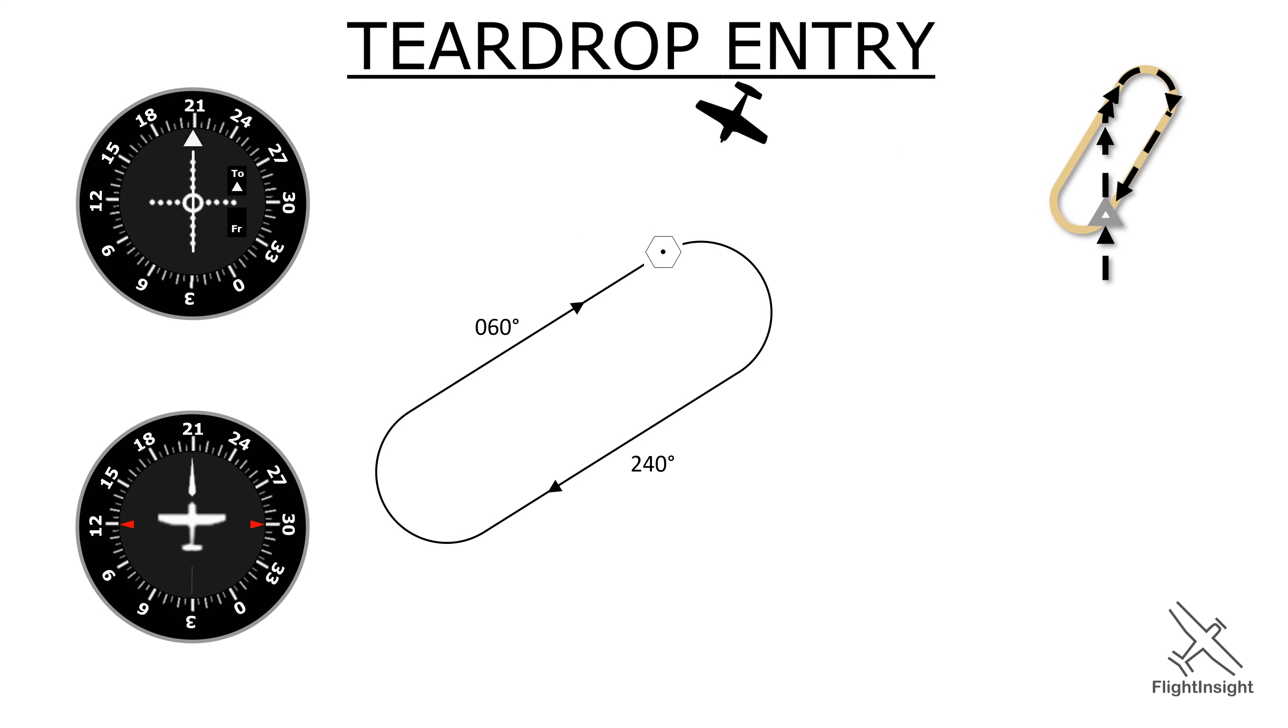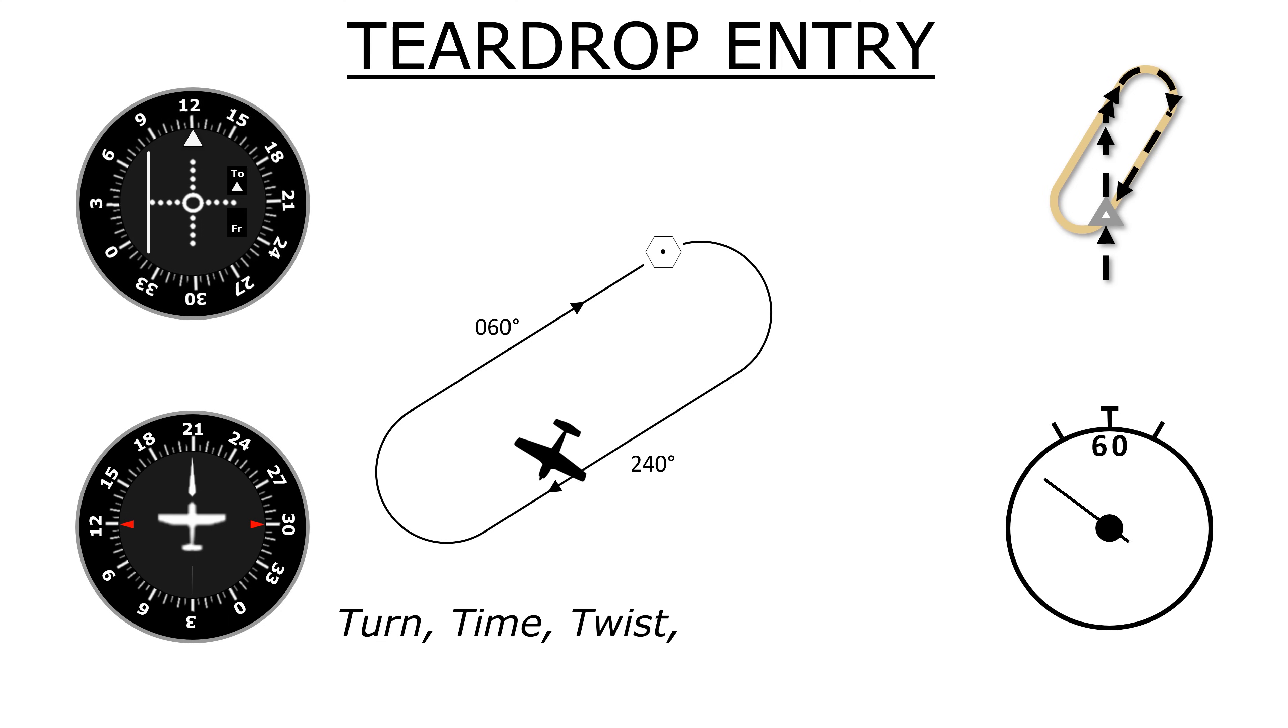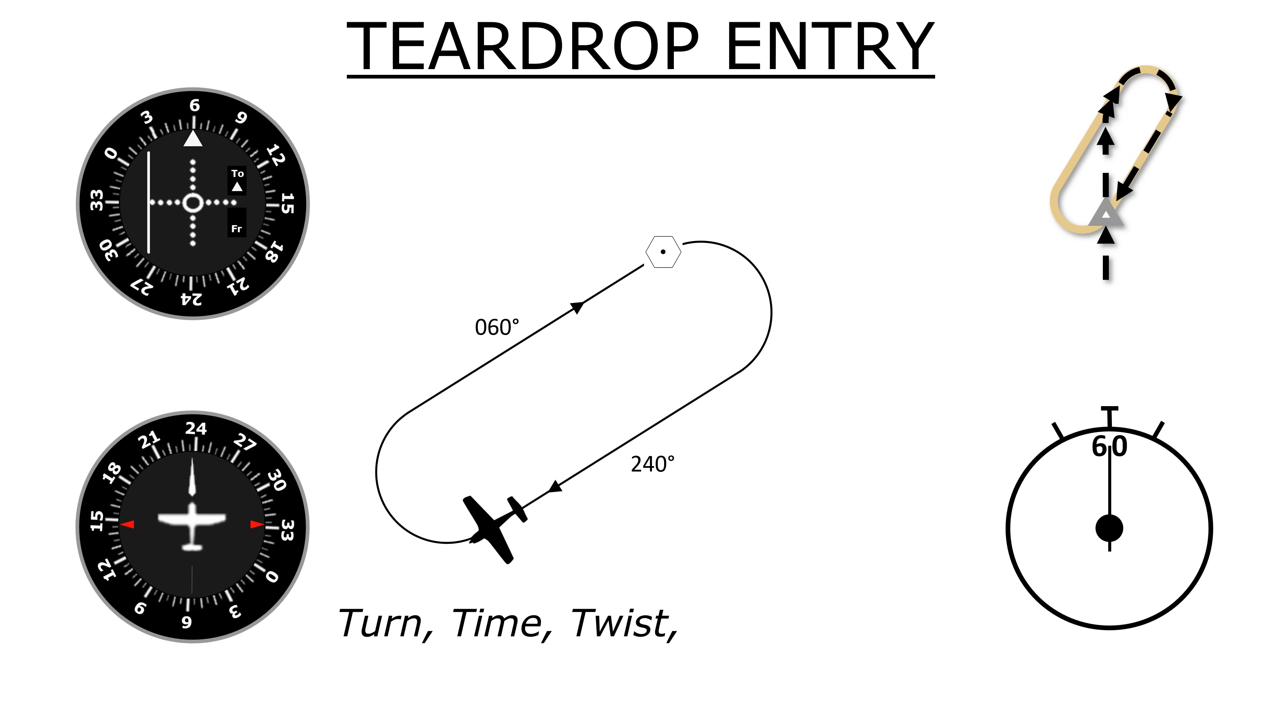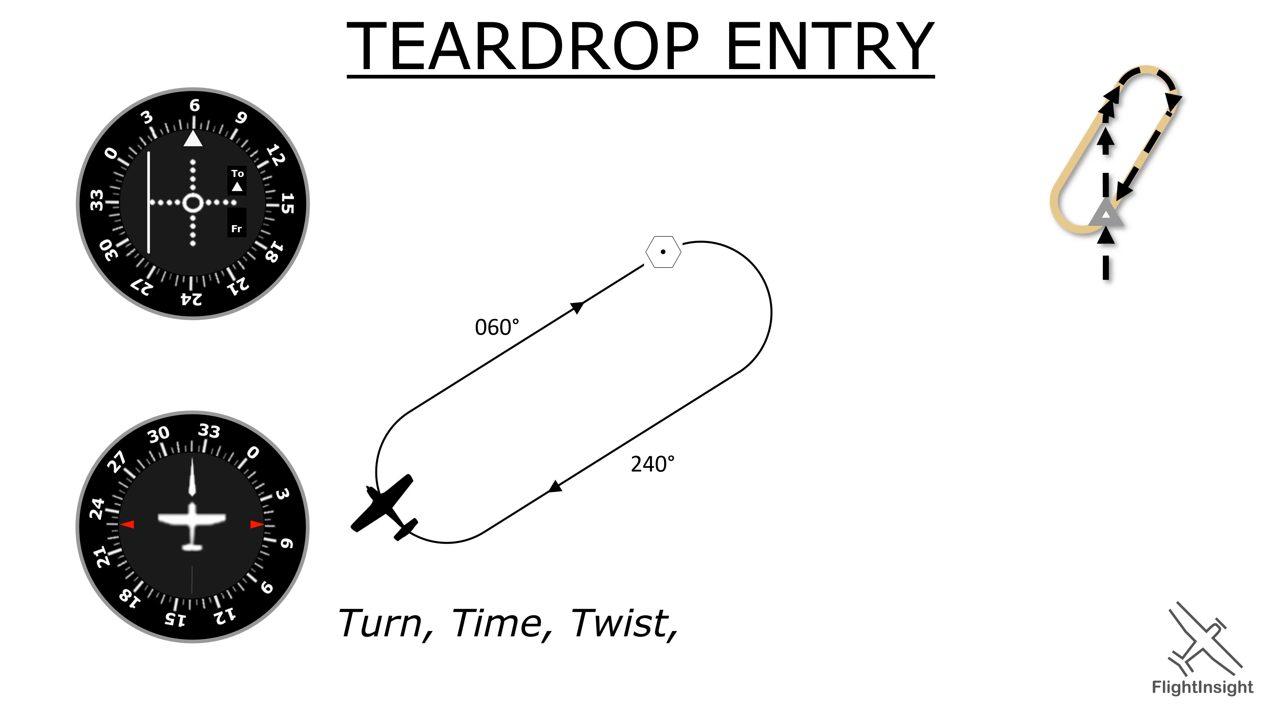Notice that 210 is already 30 degrees offset from the outbound course, so when we get station passage there's actually no need to turn. We'll start to time 1 minute in this offset. We'll twist to our inbound course of 060. After a minute, we'll make a right turn to intercept the inbound course and center the needle.